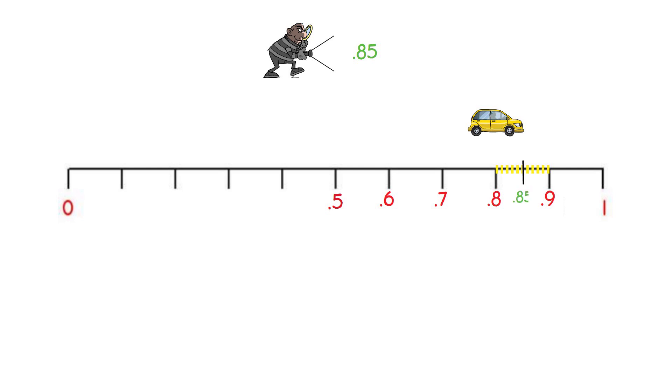Our next decimal number is 0.23. This number is between 0 and 0.5. Let's count the dashes. We have 0.1, 0.2. So our number has two tenths and three hundredths. So it's just slightly before the halfway mark of 0.2 and 0.3. As you can see, we take digit by digit to place the decimal numbers.